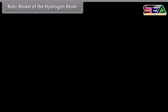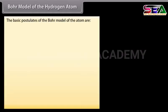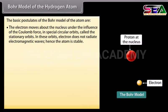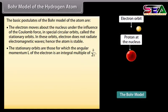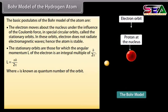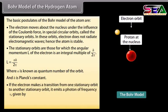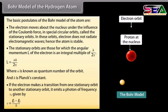Bohr's model of the hydrogen atom: The basic postulates are: the electron moves about the nucleus under the influence of the Coulomb force in special circular orbits called stationary orbits, in which it does not radiate electromagnetic waves, so the atom is stable. The stationary orbits are those for which the angular momentum L = Nh/2π, where N is the quantum number and h is Planck's constant. If the electron makes a transition between stationary orbits, it emits a photon of frequency ν = (Ei − Ef)/h.